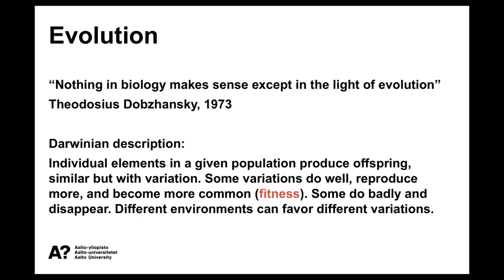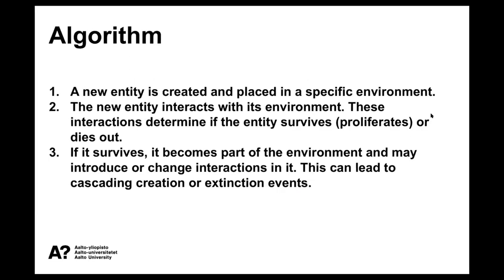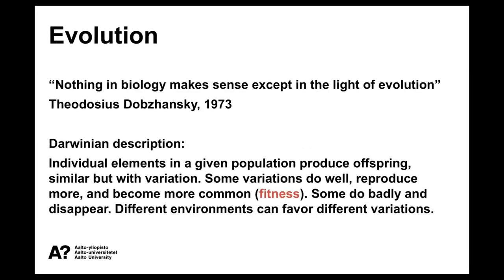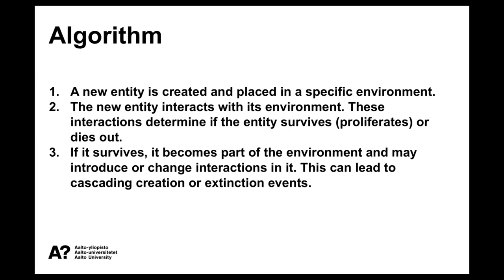Evolutionary dynamics is an attempt to make the principle of evolution into mathematics - to write it in the mathematical language - and make models that can be used to make predictions. That's important because then we can falsify these theories and have actual scientific understanding. A general evolutionary algorithm: if we try to make a mathematical theory, we can start from an algorithmic approach and make this Darwinian description into an algorithm. This would not only cover biological evolution but also stuff like economics and other kinds of evolution.